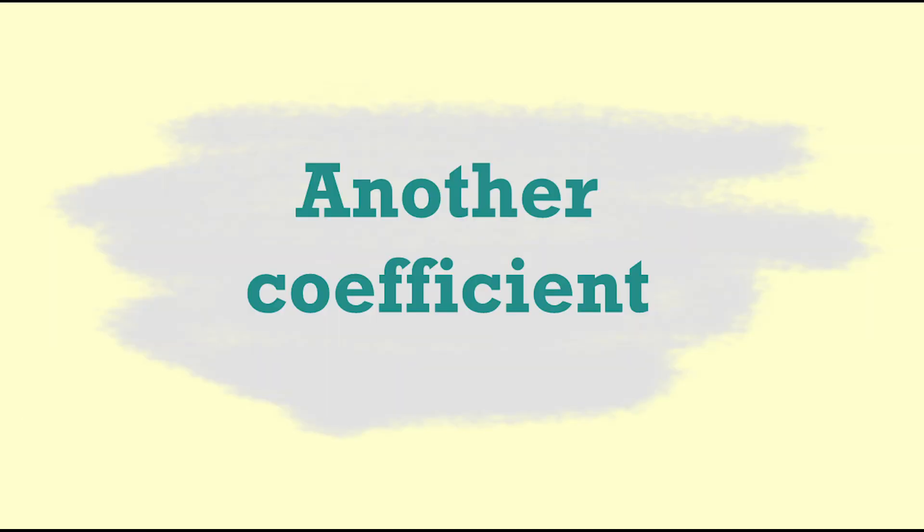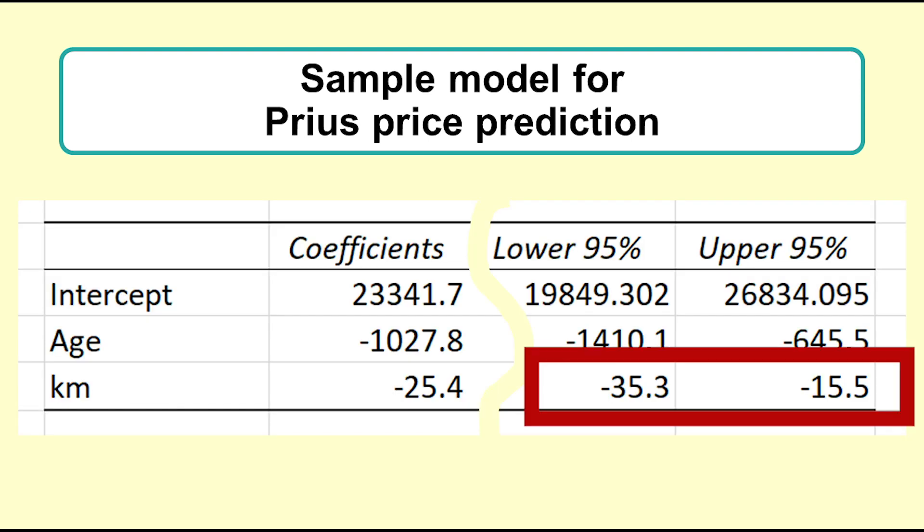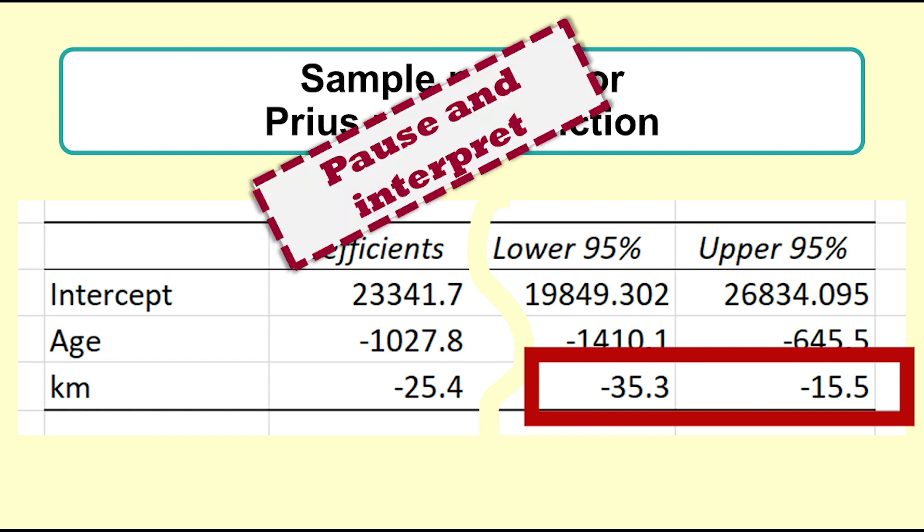Let's look at another coefficient. For the sample model, the coefficient of distance, negative 25, means that for each extra unit of distance, in this case 1000km, that the car has travelled, the price is decreased by $25, all other things being equal. The Excel output gives values of negative 35.3 and negative 15.5 for the confidence interval. Pause the video now and see if you can interpret the confidence interval for the coefficient of distance.